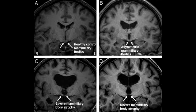What is atrophy of the mammillary body commonly associated with? Atrophy of the mammillary body is commonly associated with Wernicke's encephalopathy. Wernicke's encephalopathy is thiamine deficiency, which causes ataxia, ophthalmoplegia, and confusion.